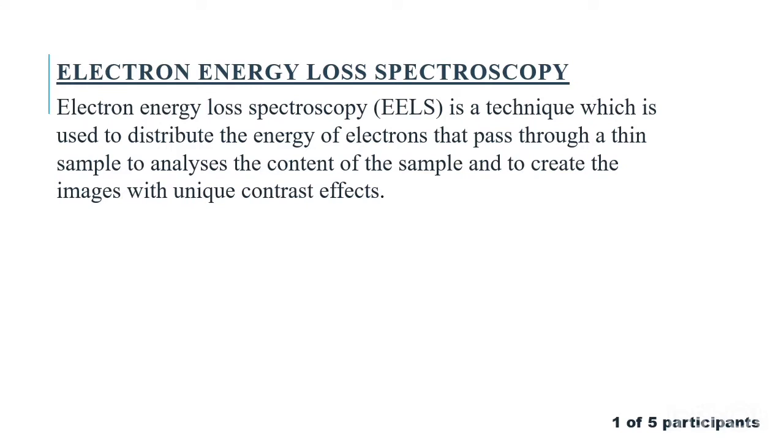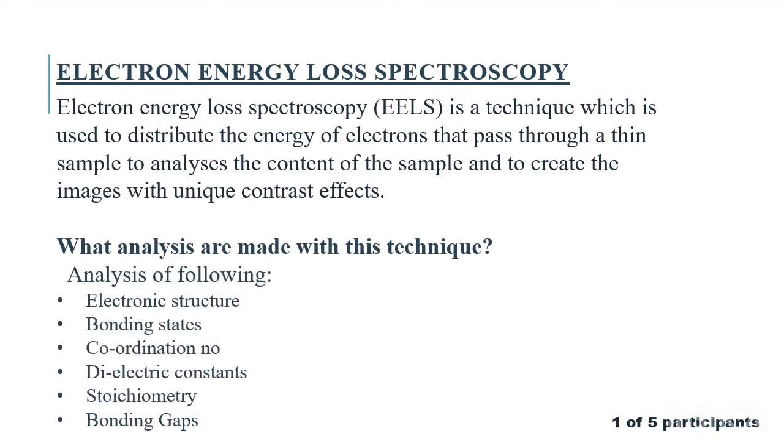This type of microscope uses high energy electrons, typically 60 to 300 kilovolts to interrogate the sample. The EEL spectrum contains a great deal of information. The analyses that can be made include electronic structure, bonding states, coordination number, dielectric constants, stoichiometry, bonding gaps, and many more.